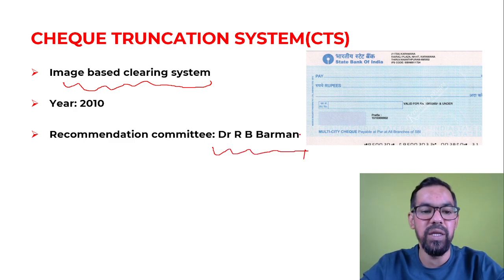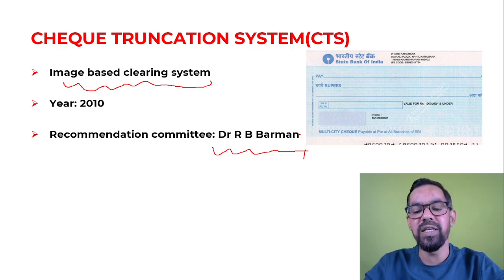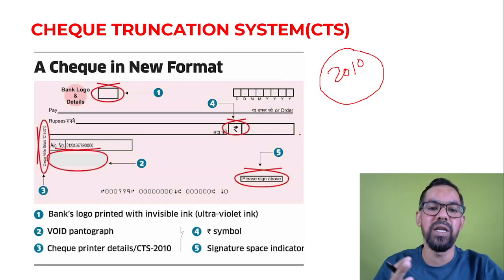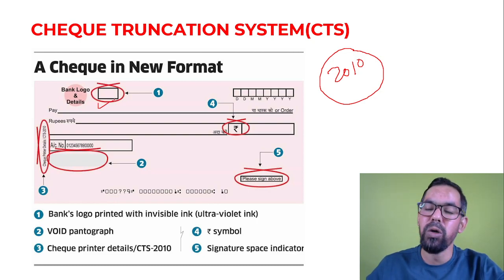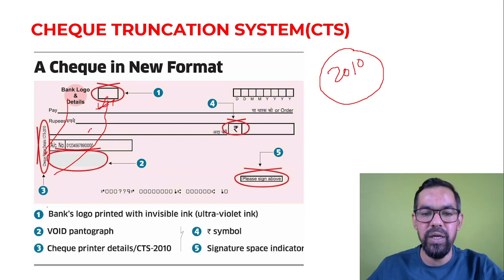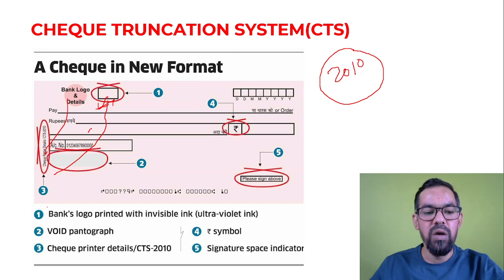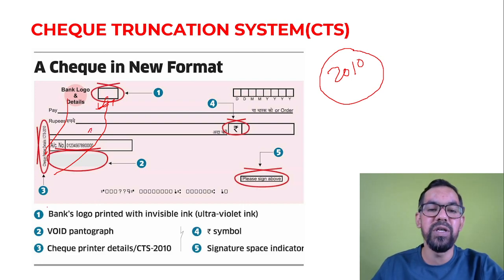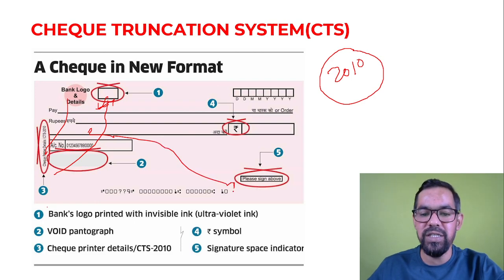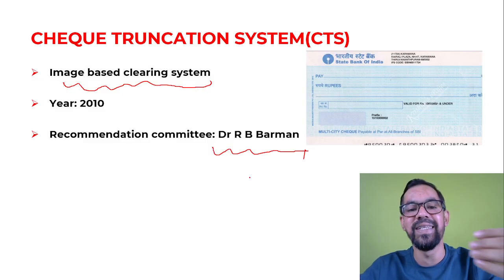It was introduced on the recommendation of Dr. R.B. Burman Committee and was launched in 2010. There are some details generally mentioned on a CTS cheque — such as the bank logo, the rupee sign, void photographs, and signature space indicators.